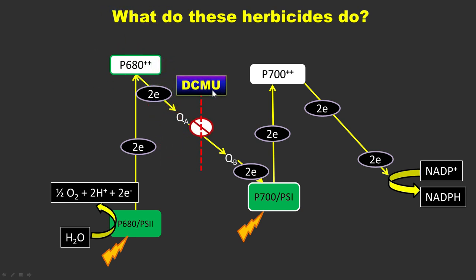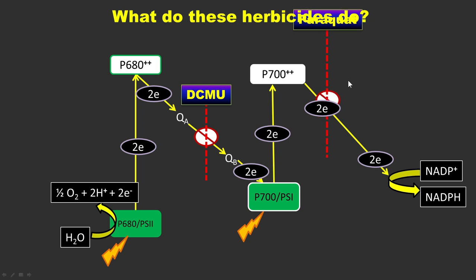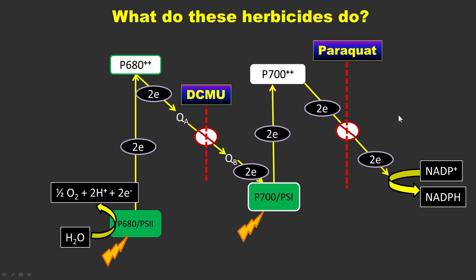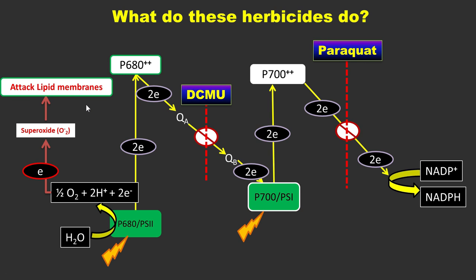When we apply DCMU and paraquat, DCMU blocks electron flow between QA and QB, while paraquat blocks electron flow at P700 or the early acceptors of Photosystem 1. If electrons are blocked, the intermediates remain in a reduced state, carrying a negative charge. If that negative charge is accepted by oxygen, it produces superoxide, which is highly reactive and attacks lipid membranes — the first line of defense of any cell — ultimately leading to killing of green tissue.